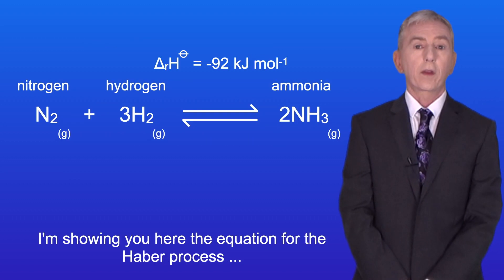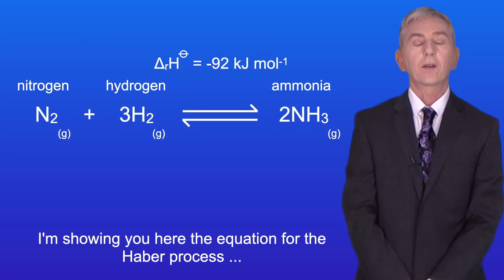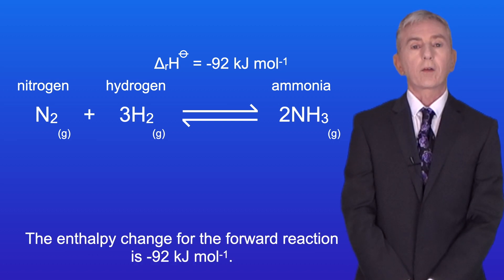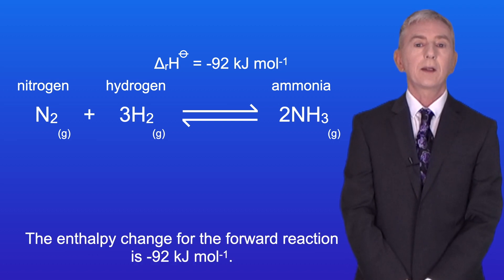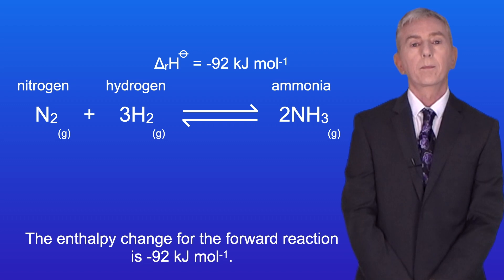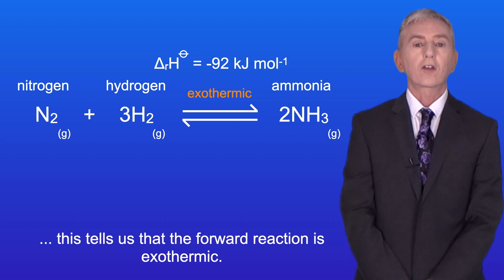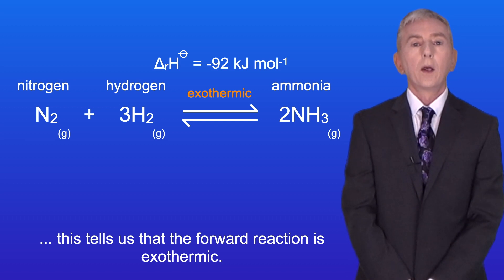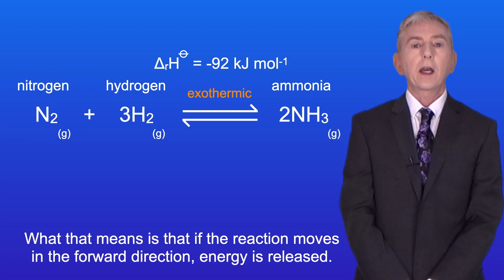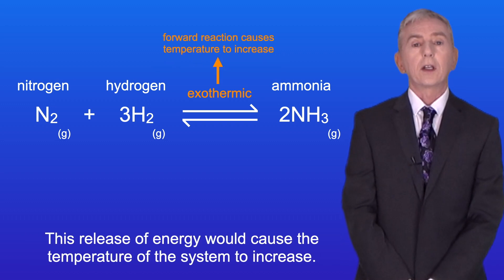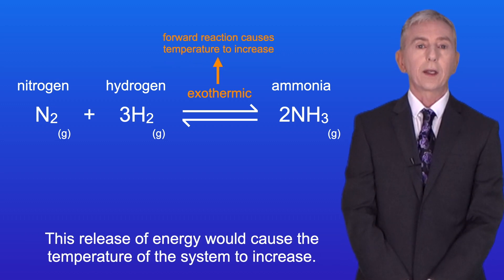In this video we're looking at how Le Chatelier's principle can be applied to changes in temperature. I'm showing you here the equation for the Haber process, which is used to produce ammonia. The enthalpy change for the forward reaction is minus 92 kilojoules per mole. Because the enthalpy change has a negative sign, this tells us that the forward reaction is exothermic. If the reaction moves in the forward direction, energy is released and this would cause the temperature of the system to increase.